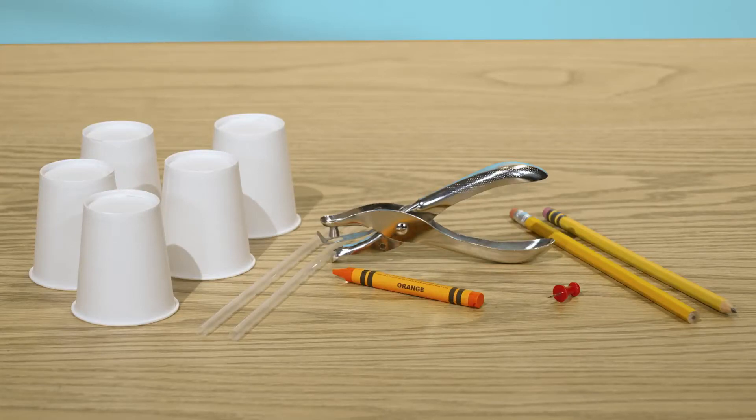To make your anemometer, you'll need five small paper cups, two straws, a hole punch, a crayon in your favorite color, a pencil with a good eraser, as well as a separate sharpened pencil, and a pushpin.